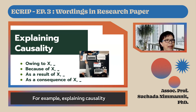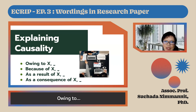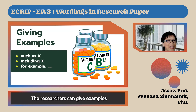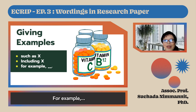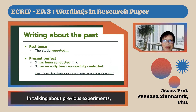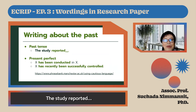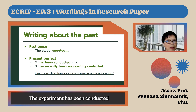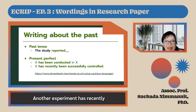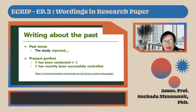For example, explaining causality: the researcher explains causes using phrases like 'because of…', 'as a result of…', or 'as a consequence of…'. The researcher can give examples of concepts using words like 'such as…', 'including…', or 'for example…'. When talking about previous experiments, the researcher writes in the past tense — for example, 'the study reported…' — or sometimes uses the present perfect to emphasize results, such as 'the experiment has been conducted in the field of…'